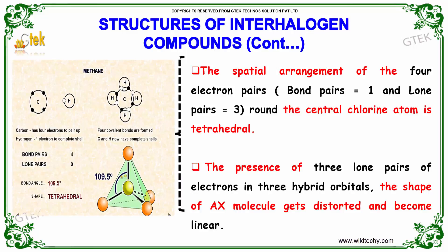The presence of three lone pairs of electrons in three hybrid orbitals causes the shape of the AX molecule to become distorted and linear. The base arrangement is tetrahedral, but the actual molecular shape is linear.